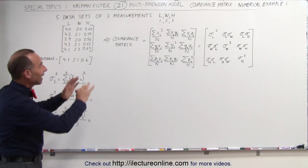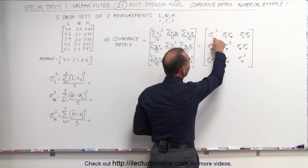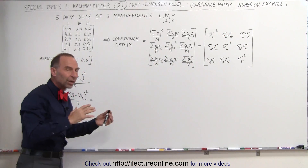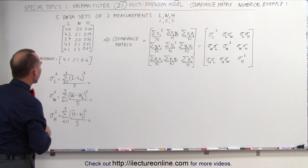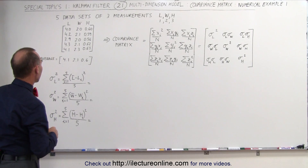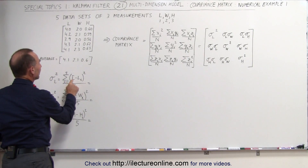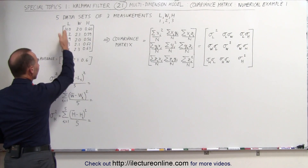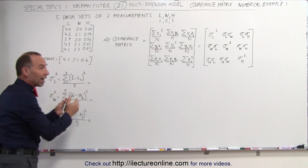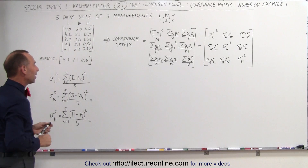So what we need to do is find those nine elements. Across the diagonal we have the variances of the length, width, and height. Let's go ahead and calculate these three variances across the diagonal. For the length, we're going to take the difference between the mean of the length measurements and each individual measurement — there are five of those. We square each one of them, sum them up, and divide by five.